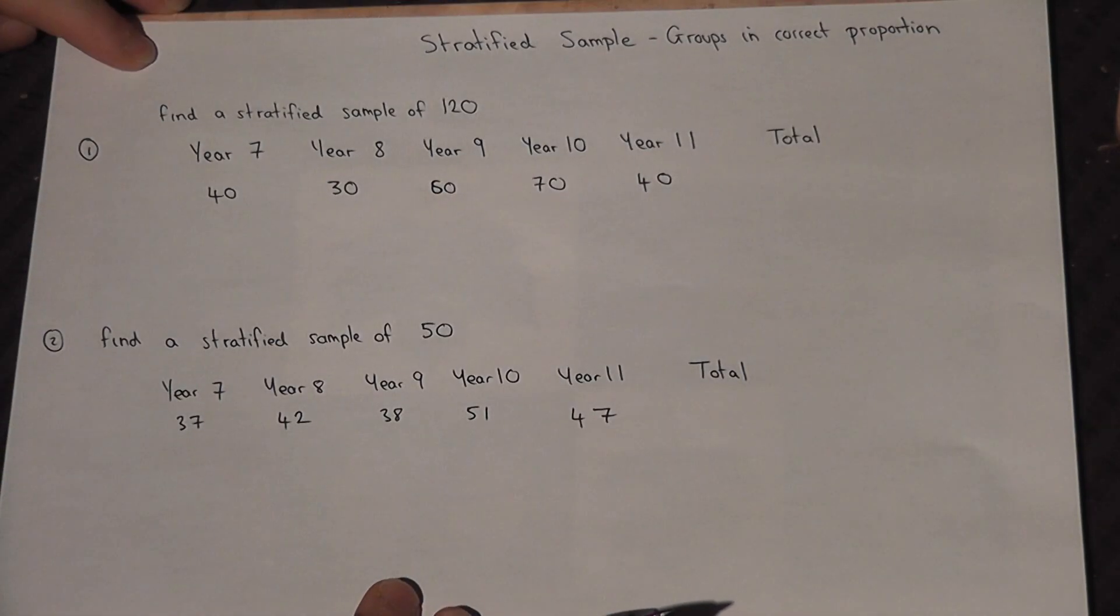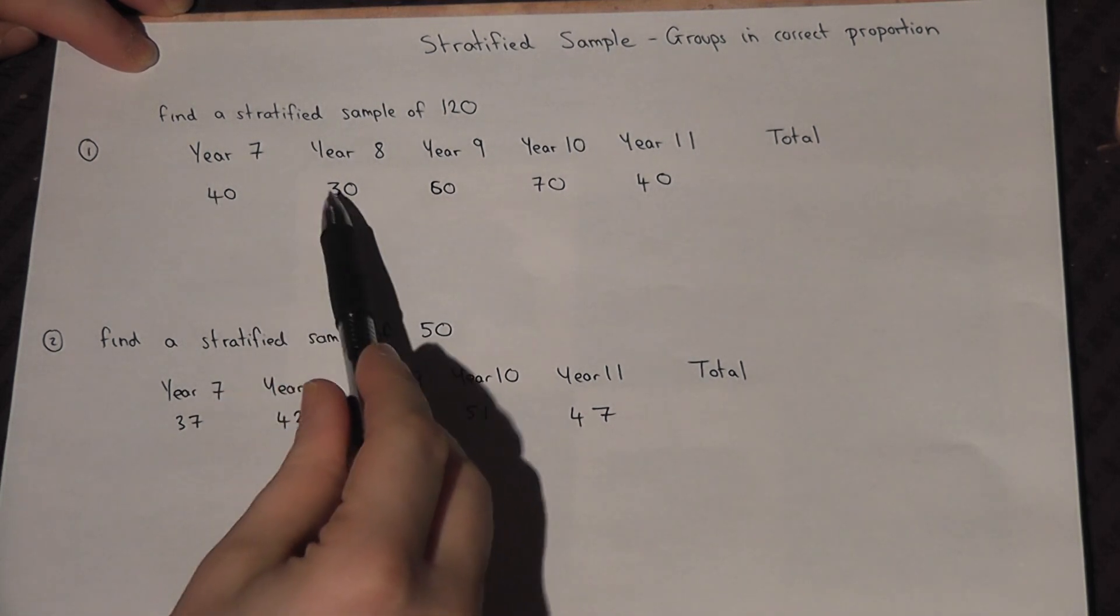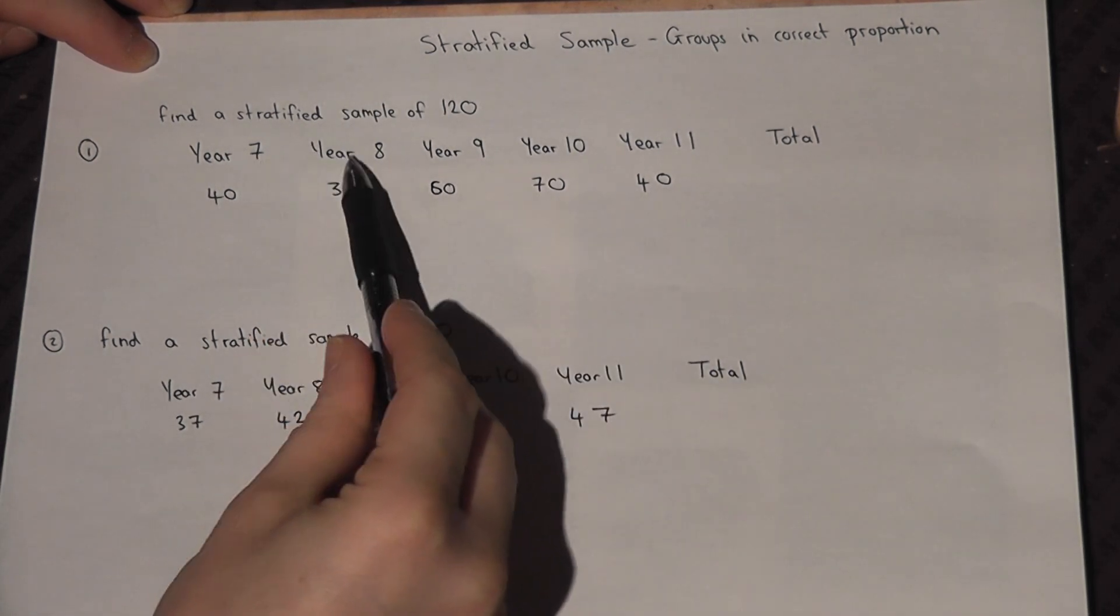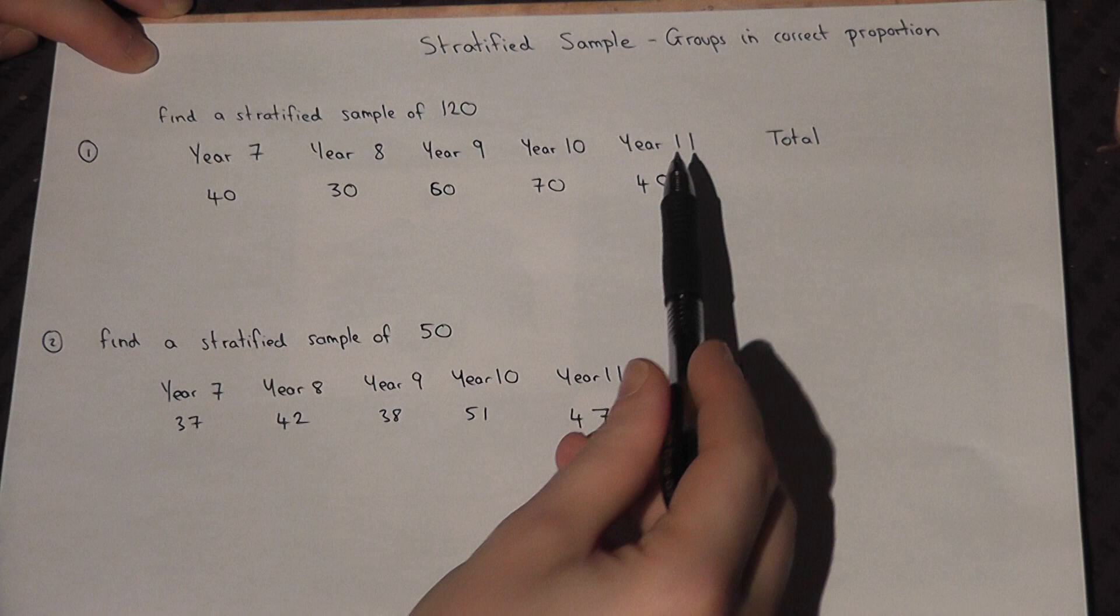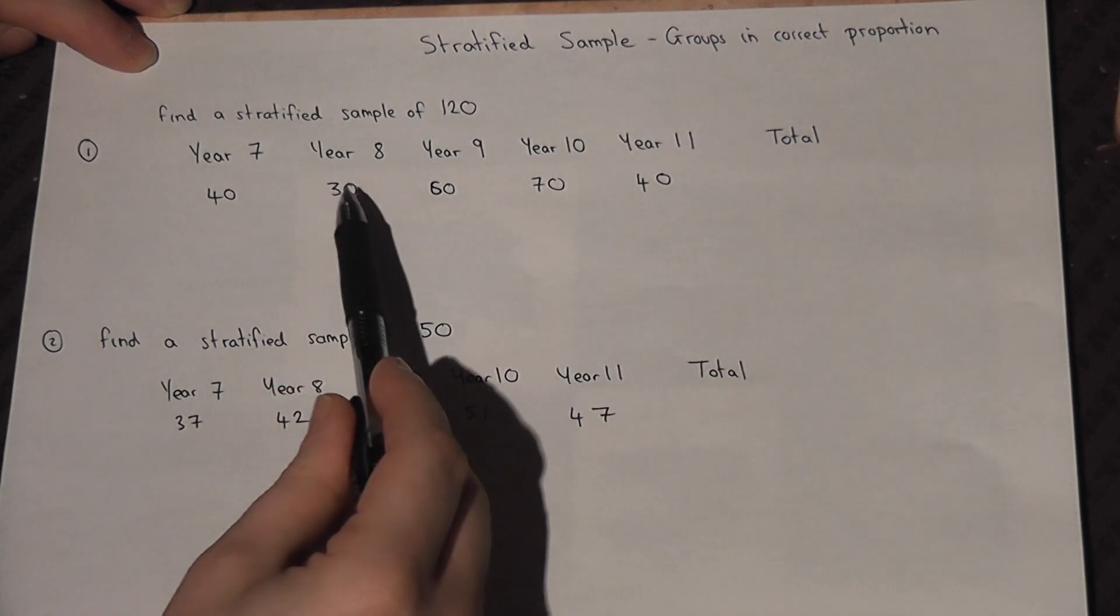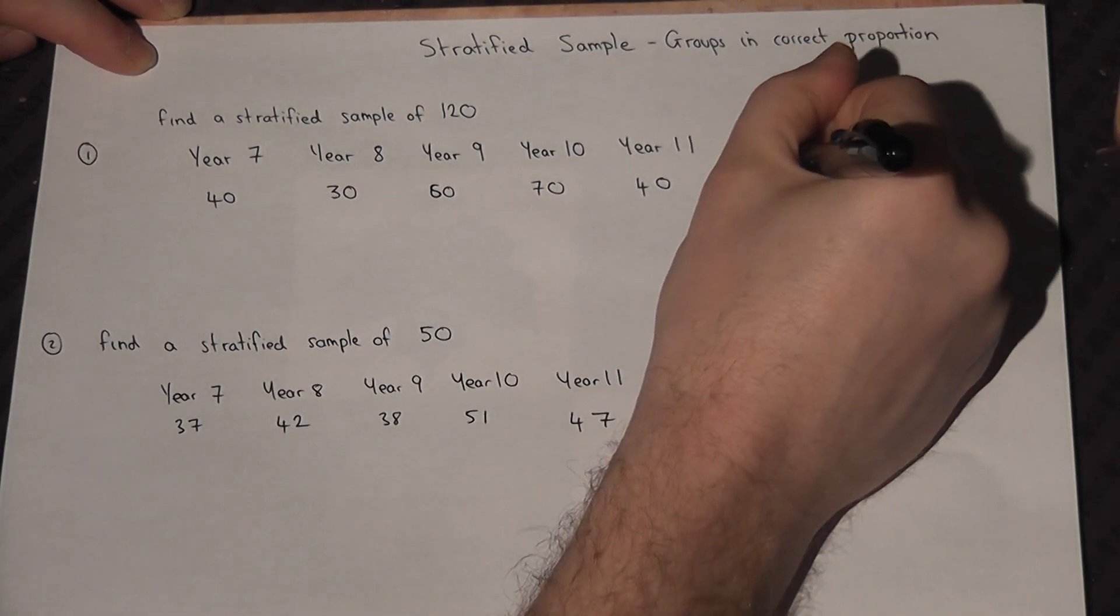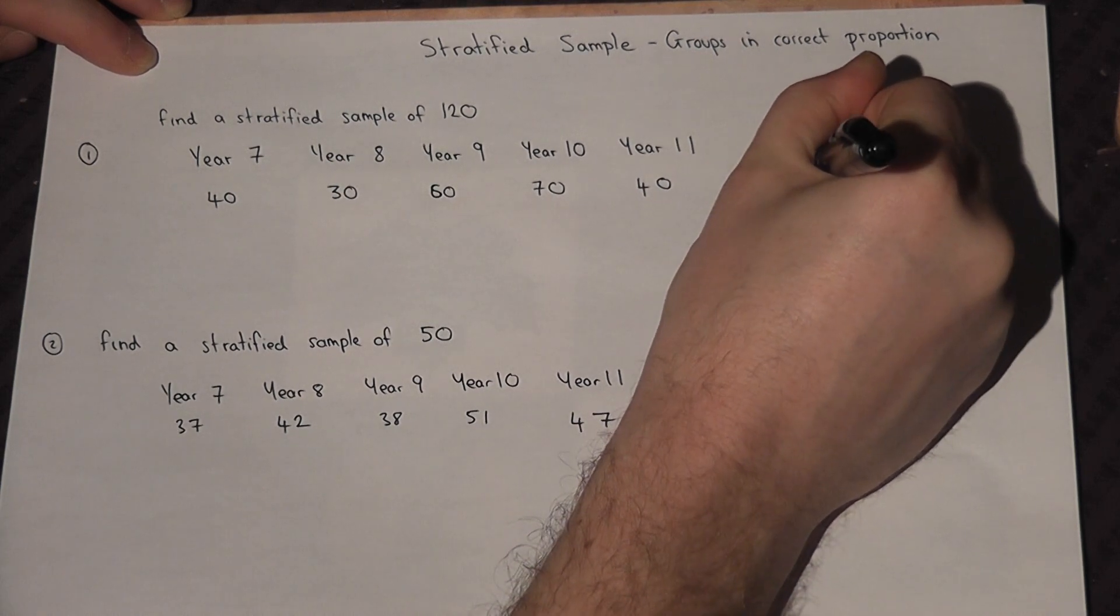So suppose in a school we have the following numbers of pupils in each year group. Now in total, if we add up all the numbers, we find there are 240 pupils in the school.